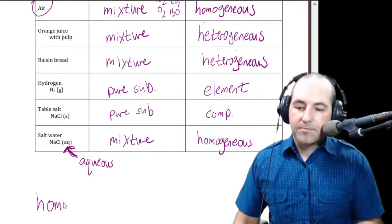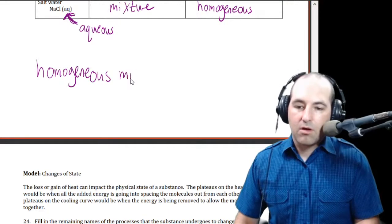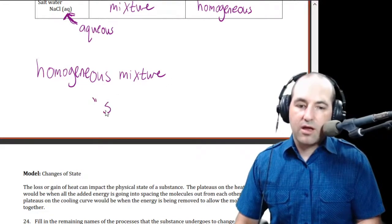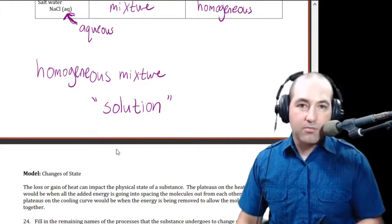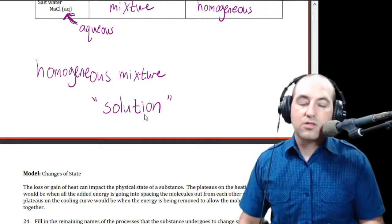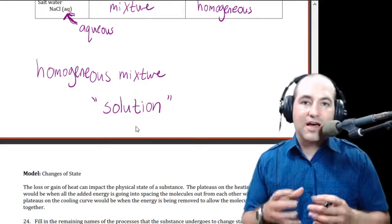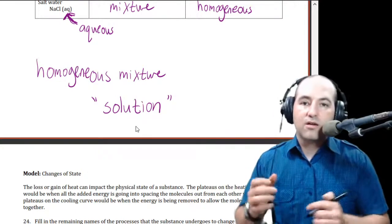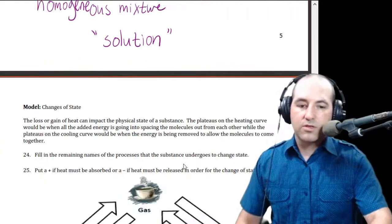To introduce another term here: in something like salt water, another way of talking about a homogeneous mixture is to call it a solution. That's not always the case — there are homogeneous mixtures that are not solutions — but solution is probably the most common type we're going to see. A solution is a homogeneous mixture where the distribution is such that all the way down to the atomic level things are interspersed evenly. Even if you zoomed all the way in, you would see pretty even distributions with no lumps.